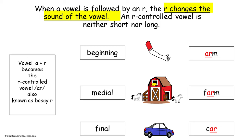A-R makes an R sound and O-R makes an OR sound. These R-Controlled Vowels can also be found in different positions of words: the beginning, medial, and final.